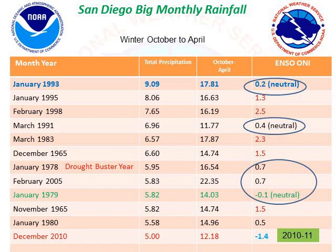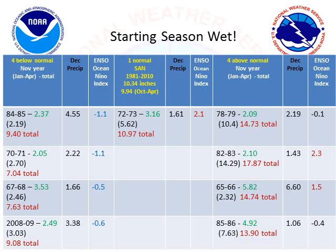The wettest months in San Diego tend to be those years where we've had neutral or very strong El Niño. The wettest month of 1993 saw 9 inches of rain. Other very wet years were also neutral, and there was a drought-buster year in 1978. Several moderate to strong El Niños also make the list, like February 1998. Most recently, the biggest wettest month was December 2010, which was actually a La Niña. And even starting off wet in a season is not always a guarantee of above-normal total precipitation for the year.